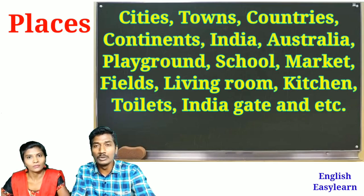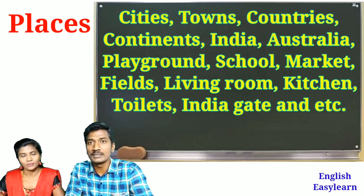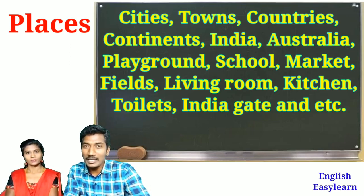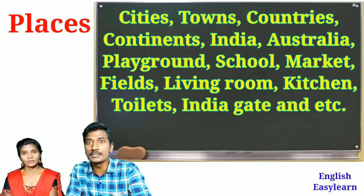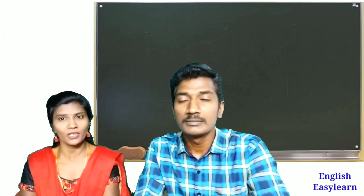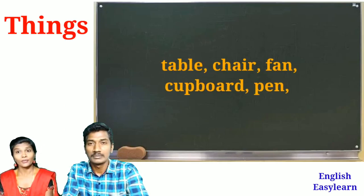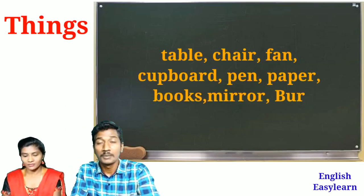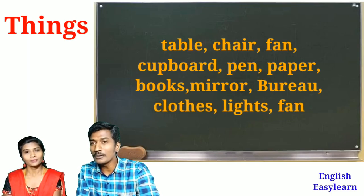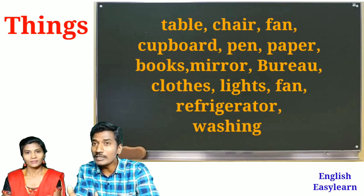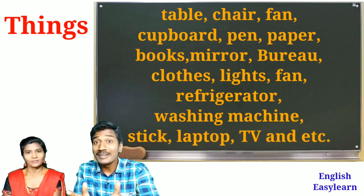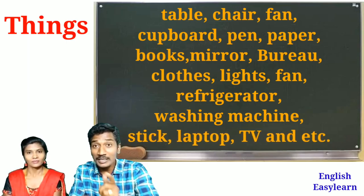Common places like school, market, fields, living room, kitchen, toilets, India Gate. You have listed so many places. Now let me tell about things: table, chair, fan, cupboard, pen, paper, books, mirror, cloth, light, refrigerator, washing machine.